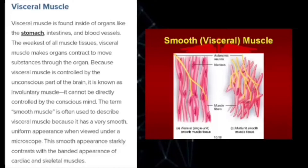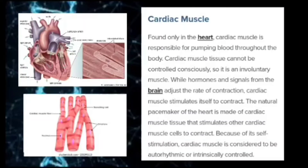This smooth appearance is contrasted with the banded appearance of cardiac and skeletal muscle. Cardiac muscle is responsible for pumping blood throughout the body. Cardiac muscle tissue cannot be controlled consciously, so it is an involuntary muscle, while hormones and signals from the brain adjust the rate of contraction. Cardiac muscle stimulates itself to contract. The natural pacemaker of the heart is made of cardiac muscle tissue that stimulates other cardiac muscle cells to contract.